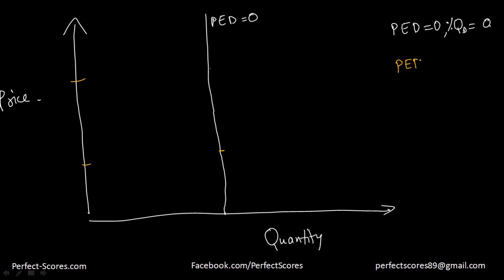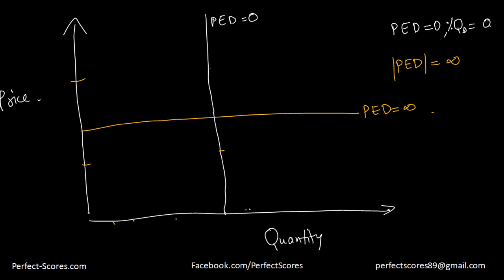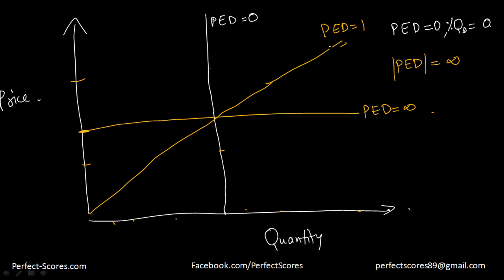When PED equals infinity, the demand curve is a horizontal line — I can keep changing my quantity demanded whichever way I want, but the price will not change. And a downward-sloping curve at 45 degrees represents price elasticity of demand equal to 1, where an equal change in price brings the same percentage change in quantity demanded.